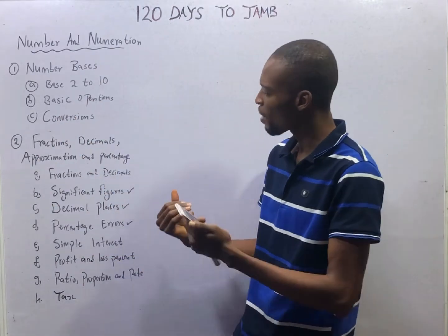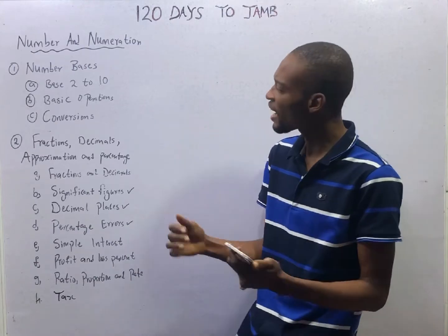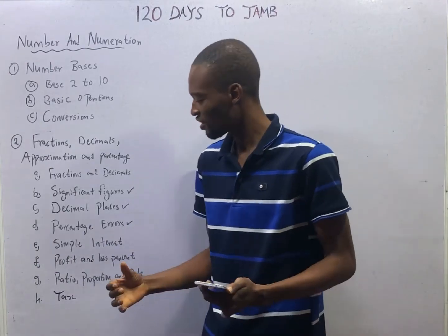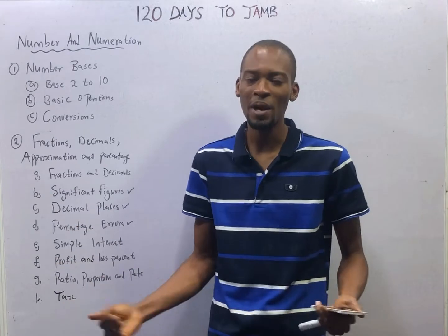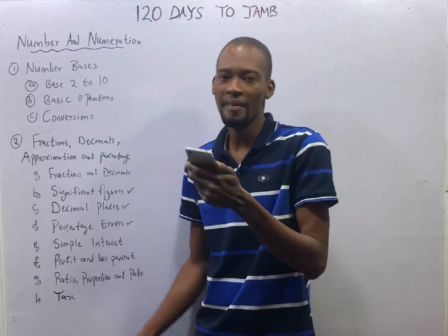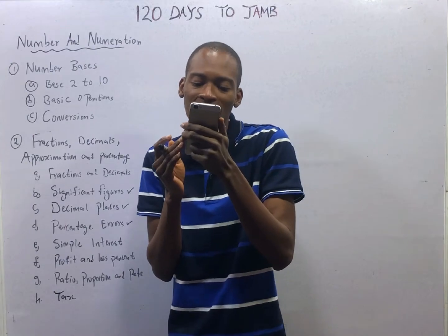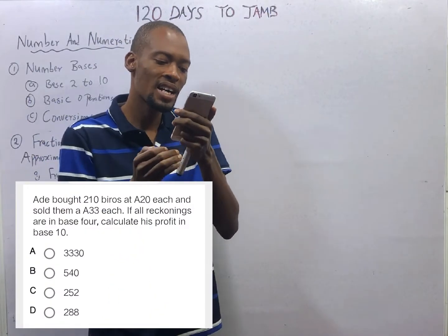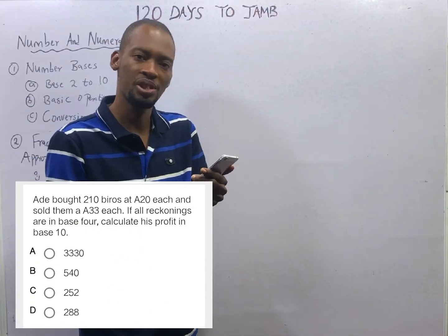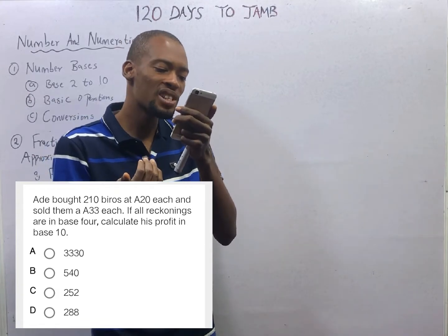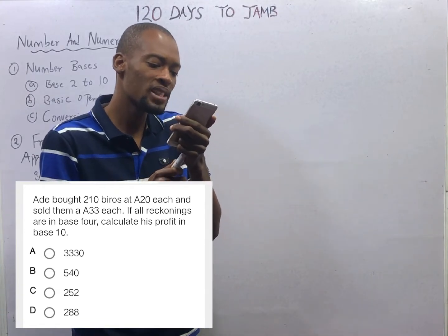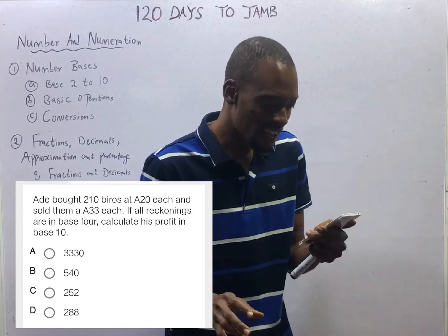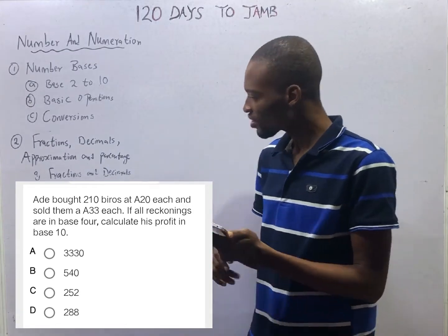We shall also look at about three, four, five questions in total to conclude number bases, then profit and loss accounts, so we can proceed to other parts of the topic. This question says: they bought 210 virus at A20, which is the price, and sold them at A33 each. If all reckonings are in base 4, calculate the profit in base 10.